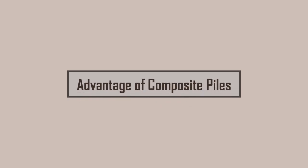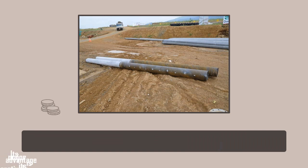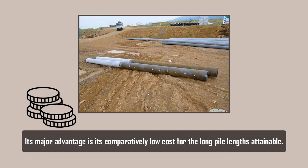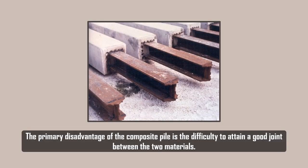Its major advantage is its comparatively low cost for the long pile lengths attainable. The primary disadvantage of the composite pile is the difficulty to attain a good joint between the two materials.